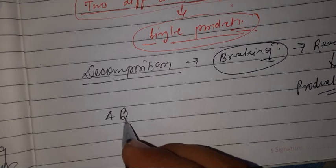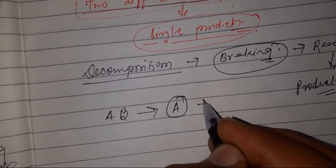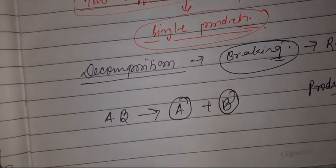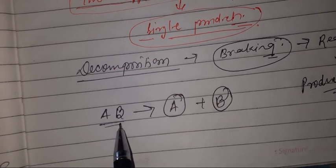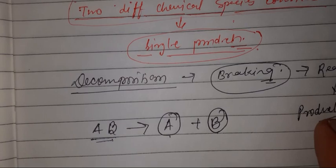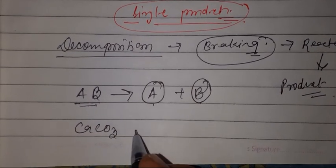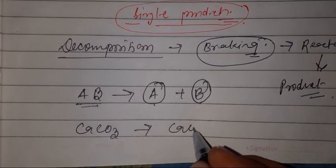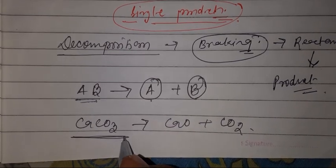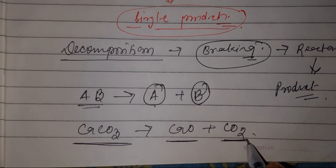Means AB breaks up and gives A and B independently. CaCO3 gives CaO plus CO2. Calcium carbonate gives calcium oxide and carbon dioxide.